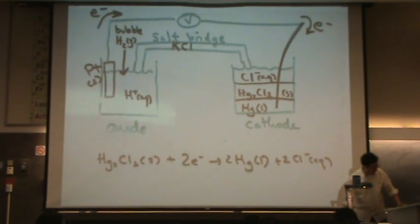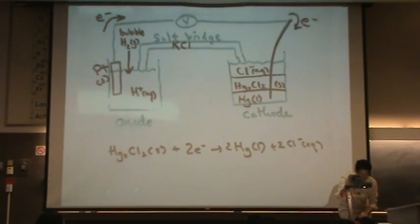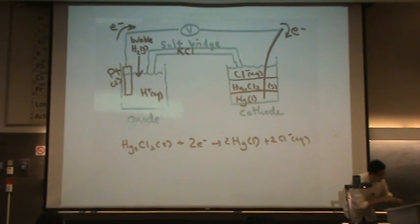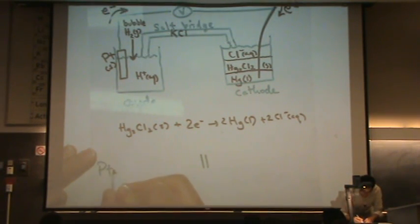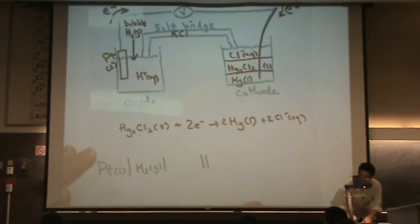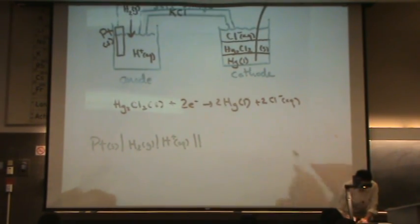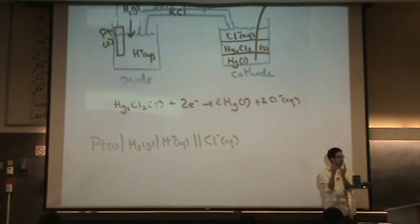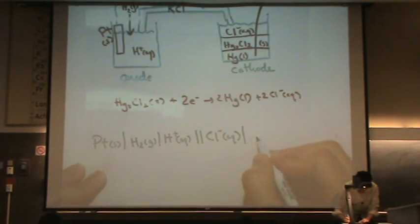And there's the salt bridge. You can write the galvanic cell in shorthand also, if you so desire, and it will look like this. Salt bridge in the middle. On the left hand side, you got platinum solid, vertical line. You've got H2 gas, vertical line. And then you've got H plus aqueous. On the right hand side, you've got Cl minus aqueous. So, what you do is you put aqueous closest to the center, then gases, then liquids, then solids.